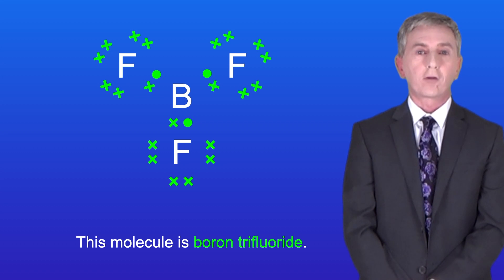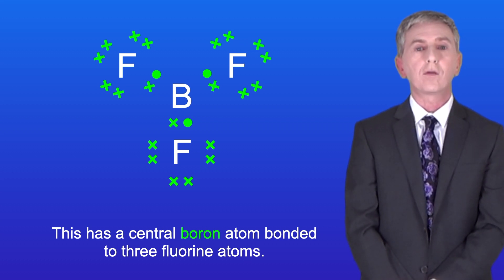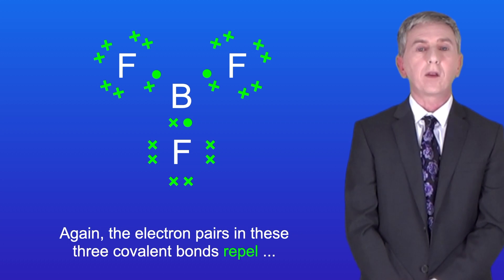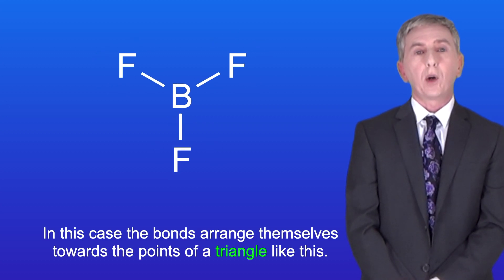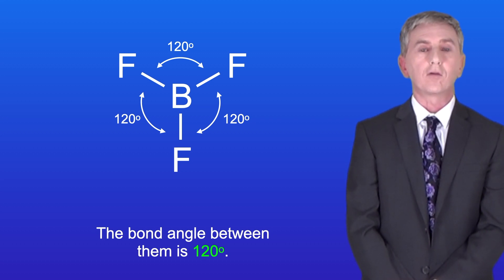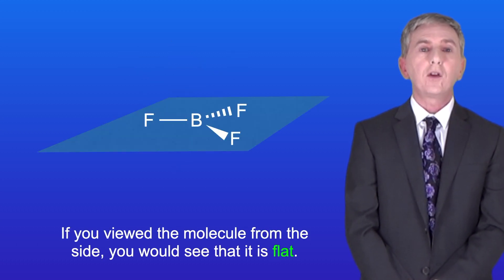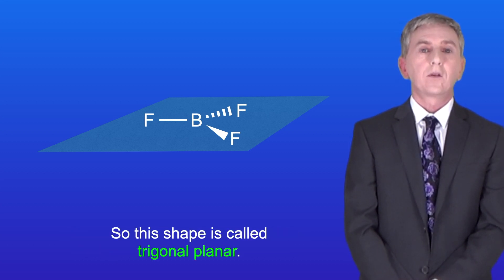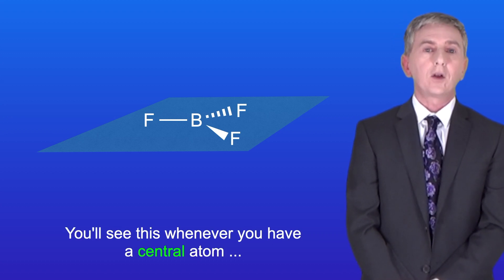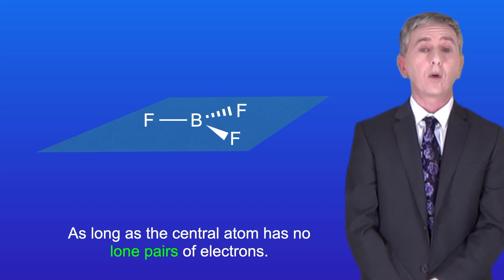Boron trifluoride has a central boron atom bonded to three fluorine atoms. The electron pairs in these three covalent bonds repel and move apart as far as possible. The bonds arrange themselves towards the points of a triangle, giving a bond angle of 120 degrees. Scientists call this shape trigonal planar — trigonal because it's based on a triangle, and planar because the molecule is flat. You'll see this shape whenever a central atom has three pairs of bonding electrons and no lone pairs.